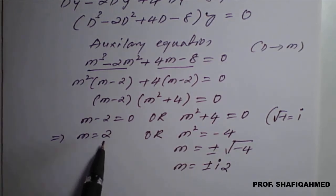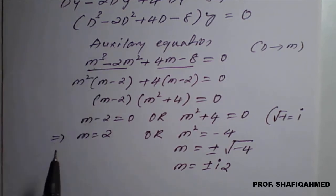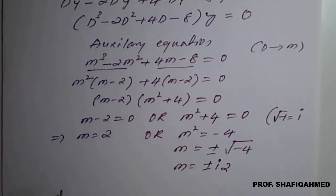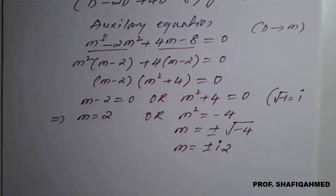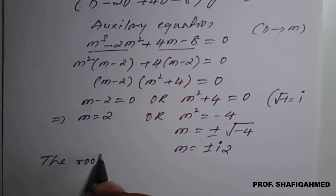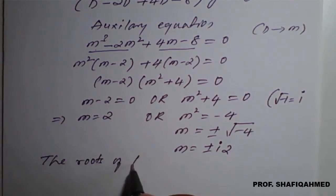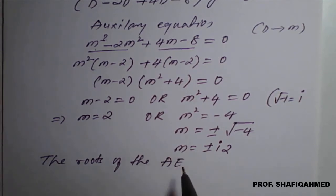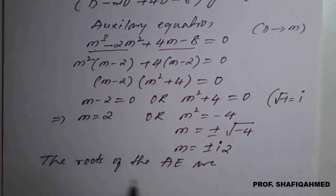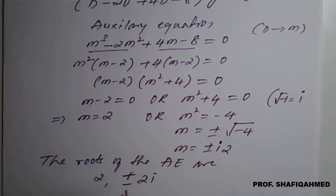Since it is a cubic equation, we need 3 values of m: m = 2, and m = +2i and m = −2i — one real root and two complex conjugate roots. This accounts for all 3 roots of the auxiliary equation.